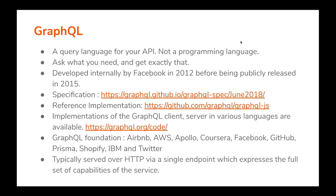GraphQL is typically served over HTTP via a single endpoint which expresses the full set of capabilities of the service, whereas a REST service would have multiple endpoints for each of its resources. It is actually reported that Facebook has been serving thousands of client versions over a single GraphQL endpoint for years without a hassle.